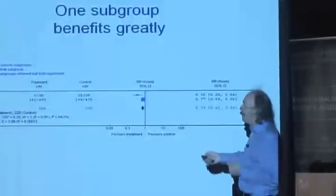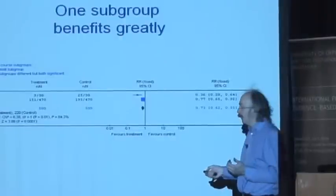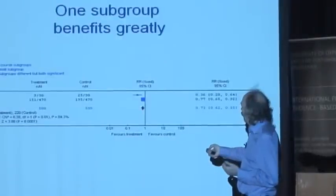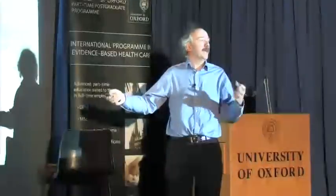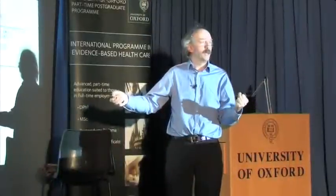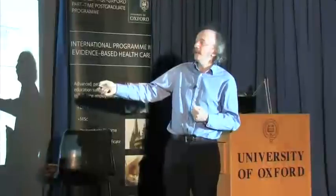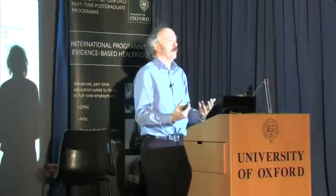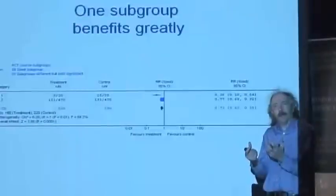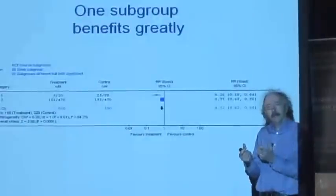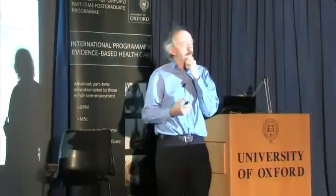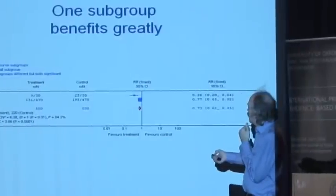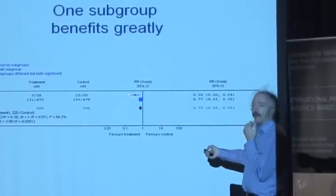Another example where we may not be quite so sure: we've got overall benefit, but it's primarily being driven by one big benefit in one small population. The size of the blue square is a guide — that's a big population, a big lump of people in that study. So it's a guide to thinking: maybe we should just be careful that this result is not actually being dragged by that one subgroup.